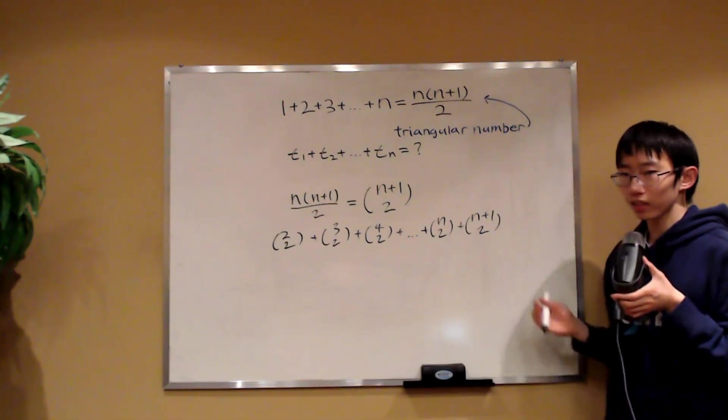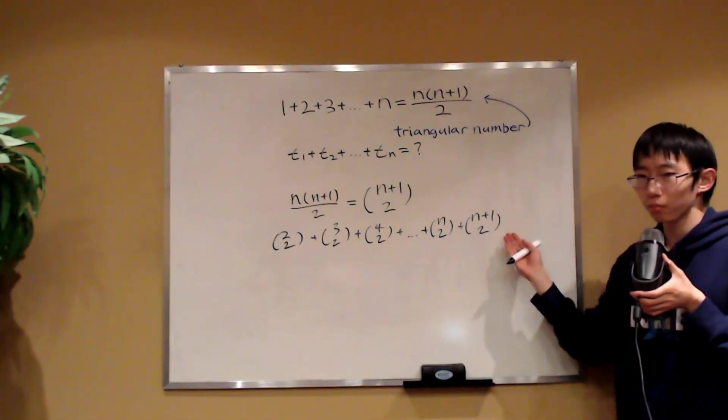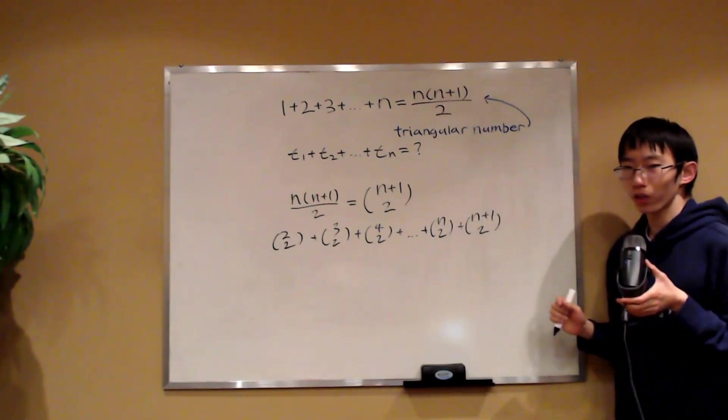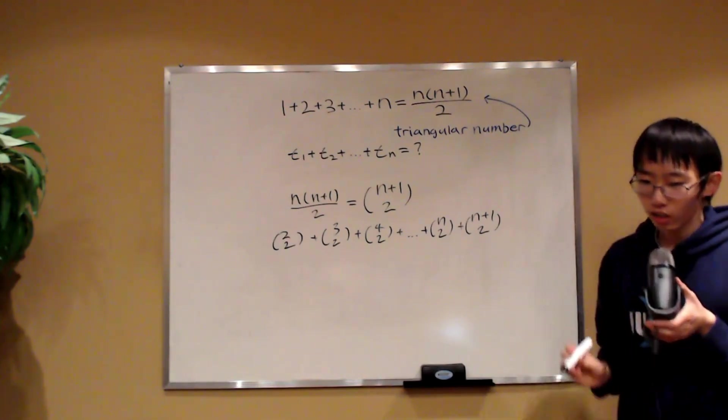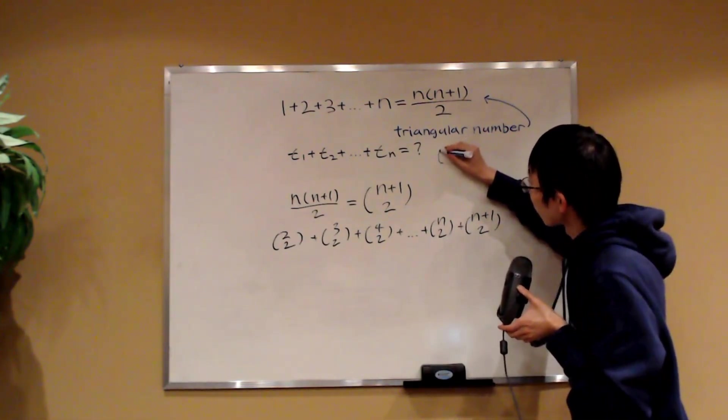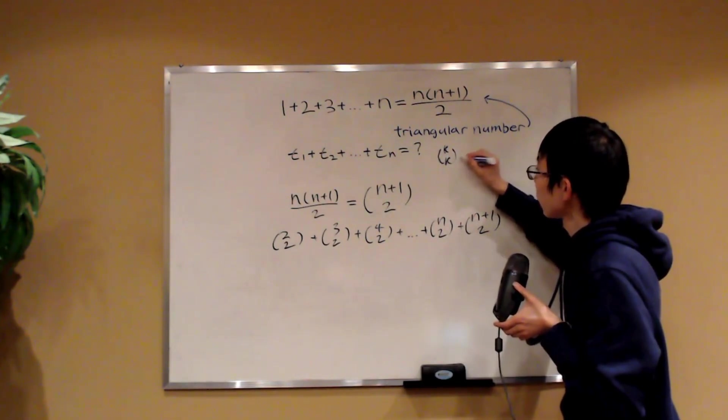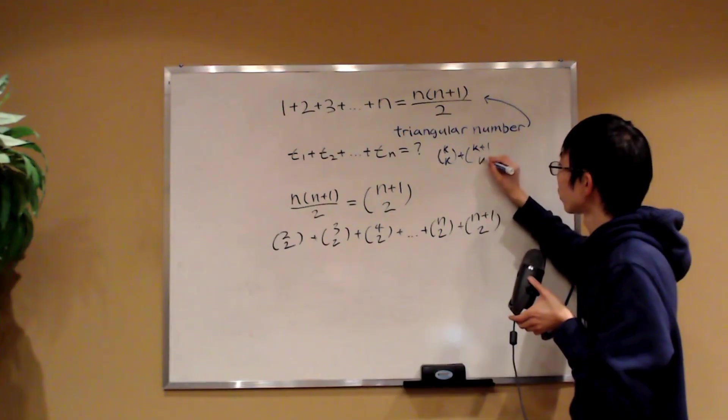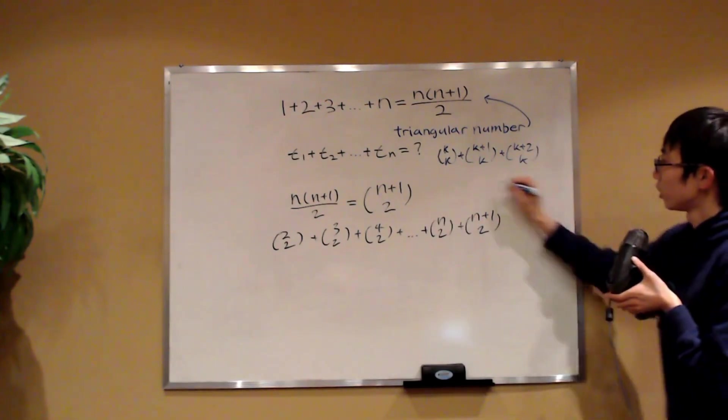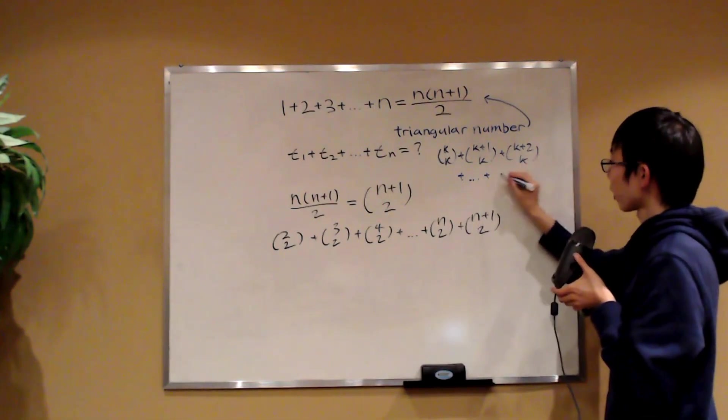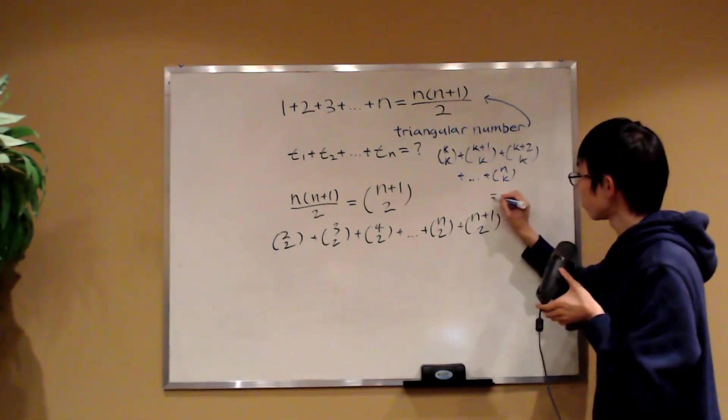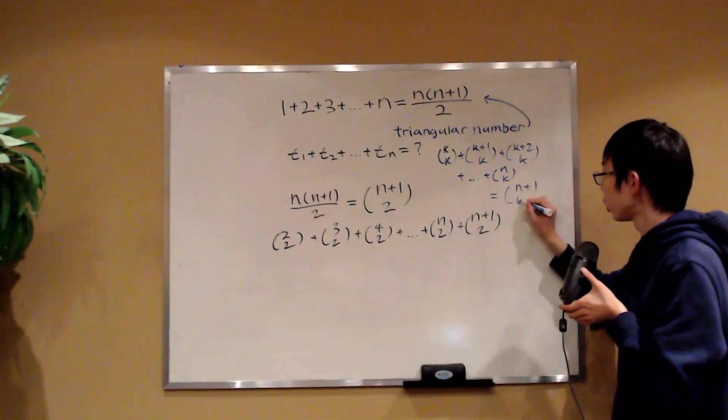Now, as I said, there are identities we can use to simplify the sum, but it might not be obvious. What do we do over here? Well, if you know the hockey stick identity, this simplifies very nicely. The hockey stick identity basically states that if you have the sum with k choose k, and then plus k plus 1 choose k, and then k plus 2 choose k, and then you just add all the way until this top part becomes n choose k, then the hockey stick identity states that this sum is simply equal to n plus 1 choose k plus 1.